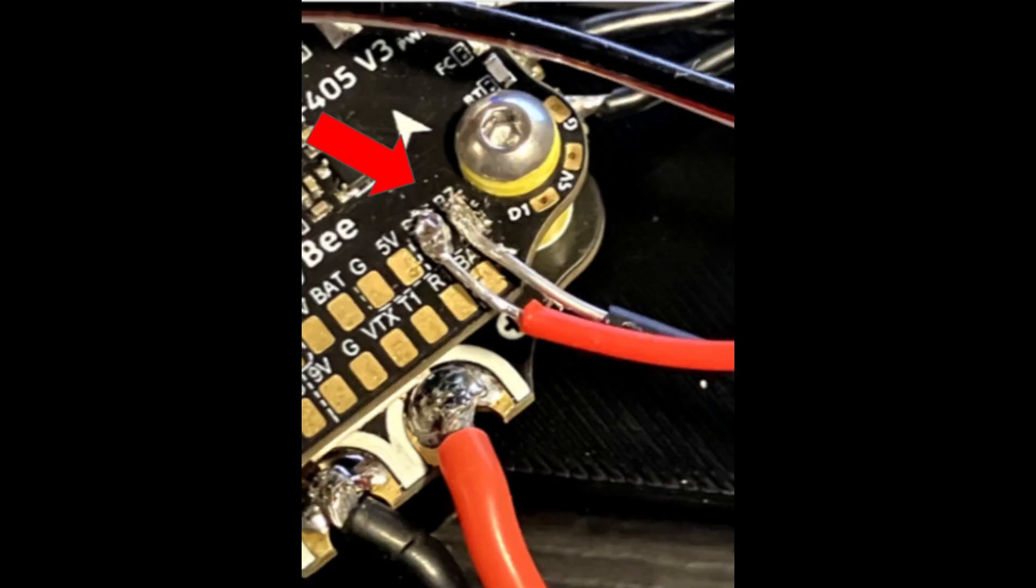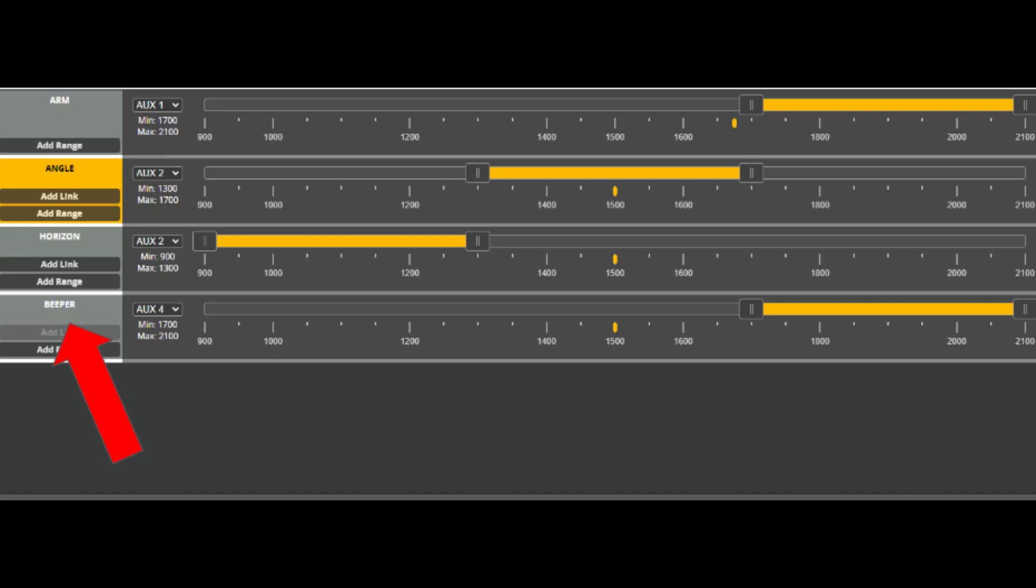I did this by repurposing the buzzer pin on my flight controller. I soldered on two wires and configured my flight controller using Betaflight to let me control the signal leaving the buzzer.